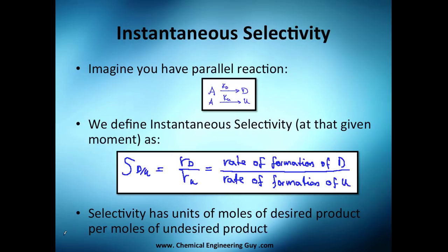Let's talk now about instantaneous selectivity. We've seen that selectivity in general is how well our reactions perform - how we're producing our desired product versus our side product. Let's imagine we have A, and of course there's a constant right here that turns it to our desired product D.